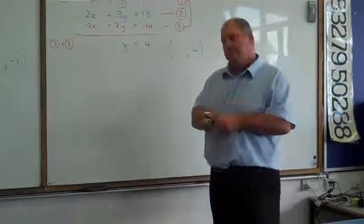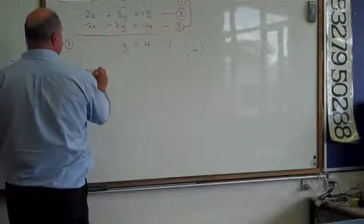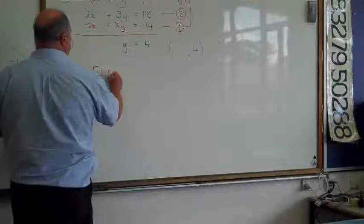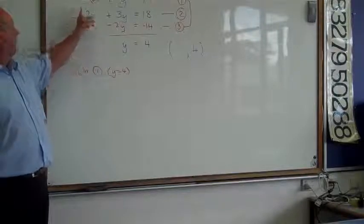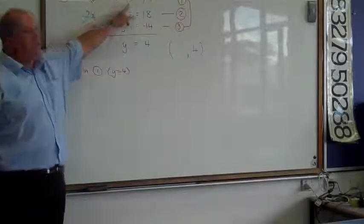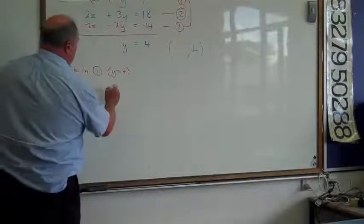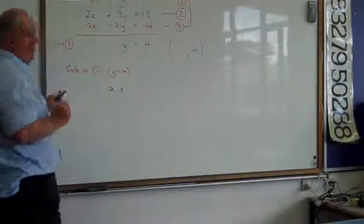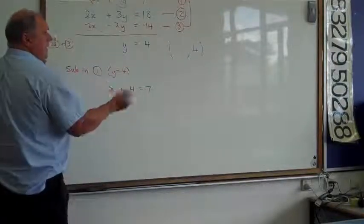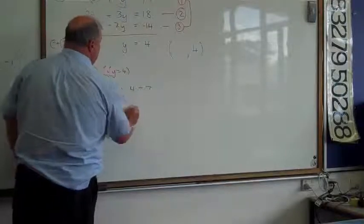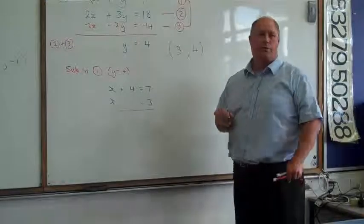What do I do with my answer? Substitute. I'm going to substitute y equals 4. Now, be careful. The equation 1 isn't with that negative 2 out of the front. The equation 1 is the original. x plus y equals 7. So, we're going to see that's going to become x plus 4 is equal to 7. Get rid of the 4 by subtracting. And x equals 3. And the answer there you're looking for is 3, 4.